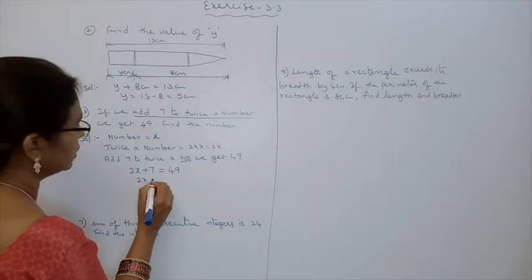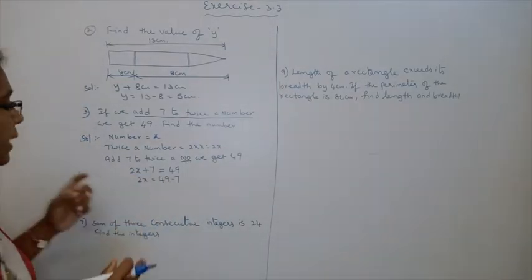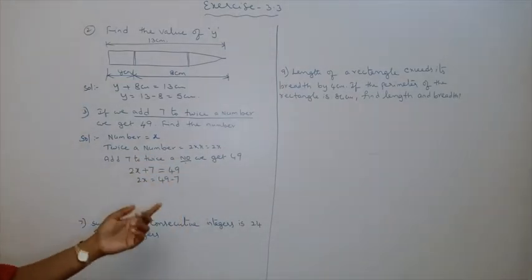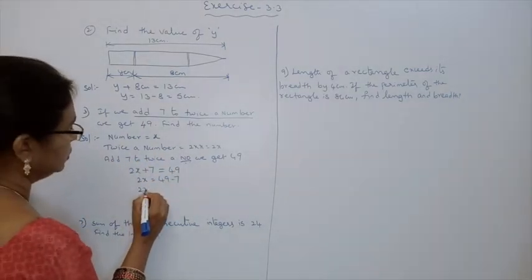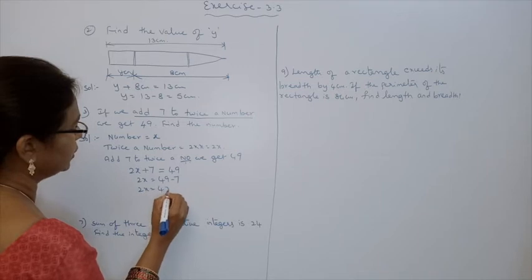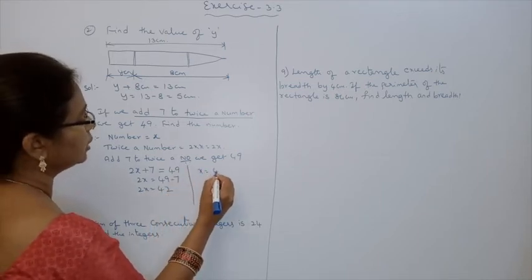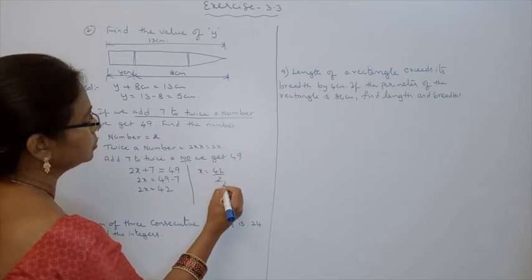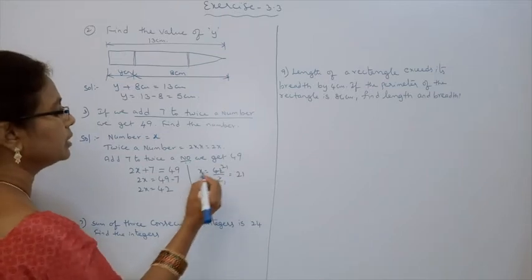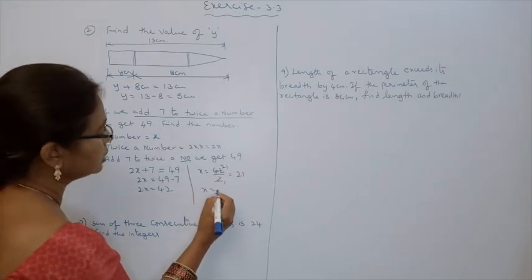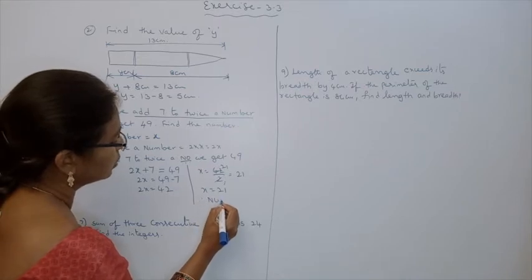Now, 2x is equal to 49 minus 7 — transforming LHS to RHS, plus becomes minus. Then 2x is equal to 42. x is equal to 42 by 2; 2 goes into 42, 21 times. Then x is equal to 21. Therefore, the number is equal to 21.